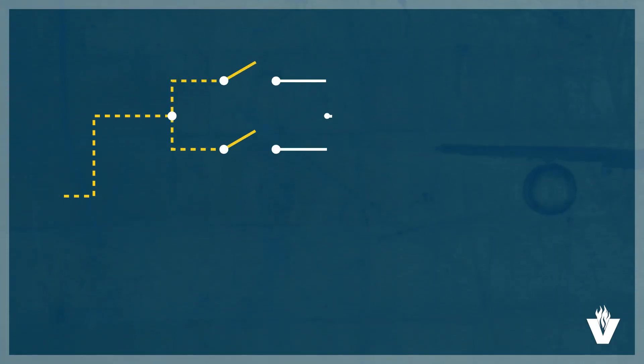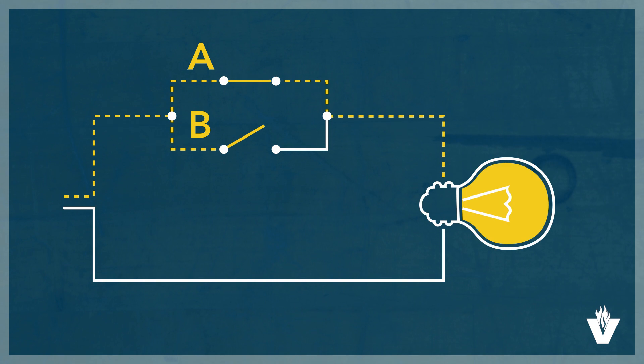To make the lamp illuminate, we must close switch A or switch B, or we can close both switch A and switch B.